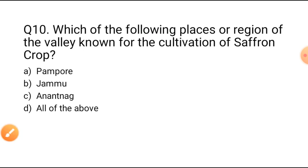Question ten: Which of the following places or regions of the valley are known for the cultivation of saffron crop? Option A: Pampore. Option B: Jammu. Option C: Anantnag. Option D: All of the above. Pampore region is known for the cultivation of saffron crop, so Option A is the correct answer.